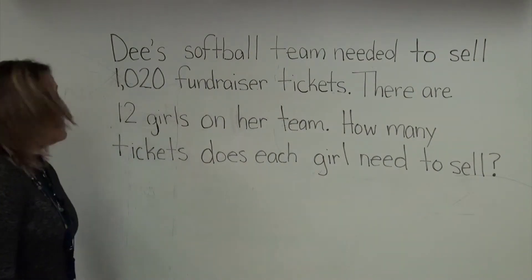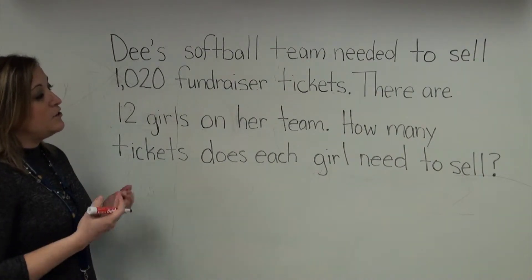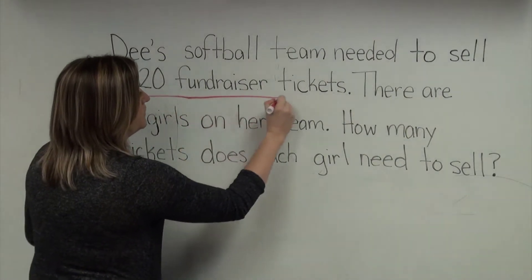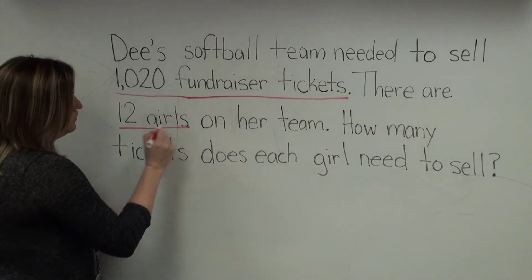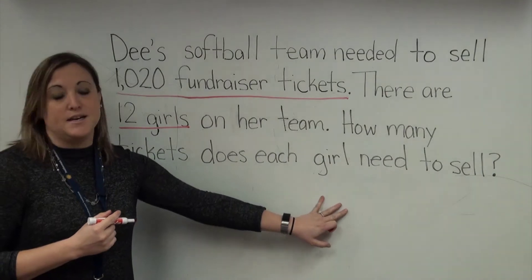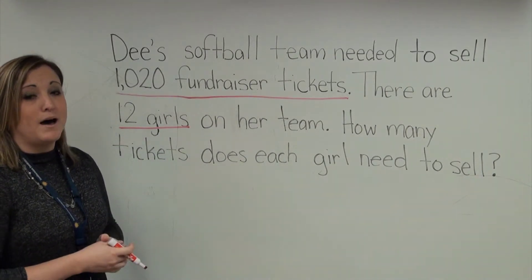To figure out this problem, I need to figure out the important information so that I know what operation I'm going to use. I know that there are 1,020 fundraiser tickets that need to be sold. They need to be sold between 12 girls. What I'm going to need to do is take the 1,020 tickets and group them into 12 groups. When I group, I use division.